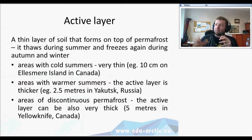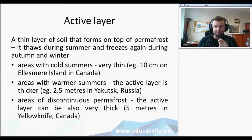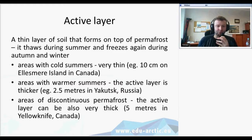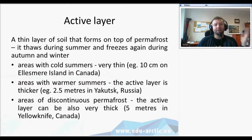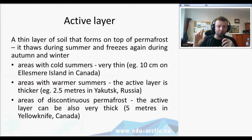During winter the ground freezes, but during summer it can happen that the upper part of the ground — just right below the surface — thaws. Underneath it remains frozen because winter temperatures were so cold that summer temperatures cannot thaw the whole ground. The thin layer of soil that forms on top of permafrost is called the active layer. It freezes again during winter and thaws during summer. In northern Canada this active layer can be only 10 centimeters, but in areas with warmer summers such as Yakutsk in Russia, it can reach up to 2.5 meters.